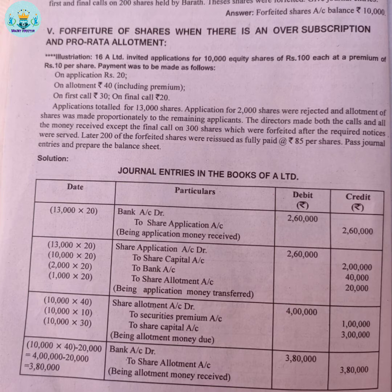How are we going to categorize the payment? Application is Rs.20, allotment is Rs.30, and the premium is Rs.10. Call money: first call is Rs.25, final call is Rs.25. So there is a first and final call. Numbers like 60, 42, 60, 70, 80, 100 are referenced. Premium Rs.10 at the given rate.